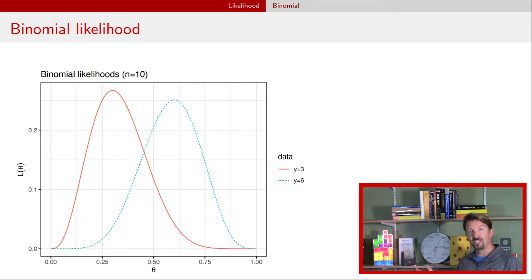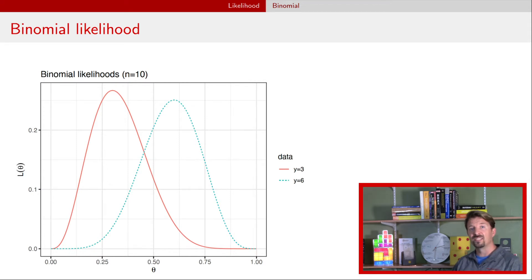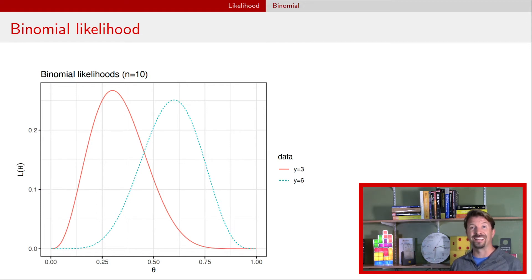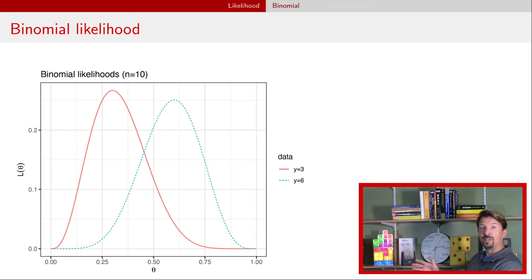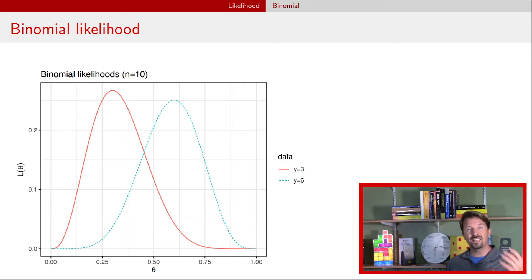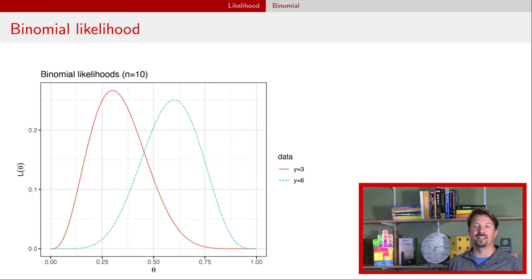Here is a visualization of two different likelihoods — one in the solid red line and a different one in the dashed blue line. If we take a look at the solid red line, suppose we ran an experiment and got three successes out of 10 attempts; the likelihood would be this red line. In contrast, if we got six successes, the likelihood would be that blue dashed line. In the experiment with three successes, values around 0.3 have a higher likelihood than values away from 0.3. Similarly, in the experiment with six successes, the peak of the likelihood is around 0.6 and it tails off in either direction, indicating those values are more supported by the data.